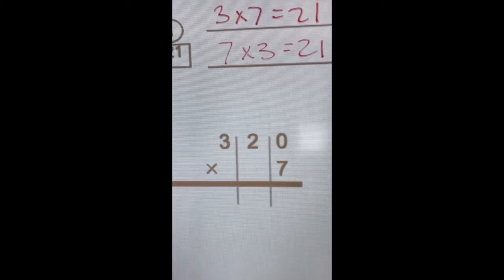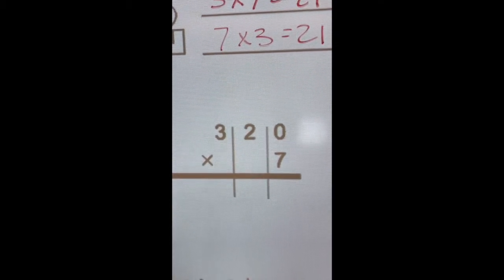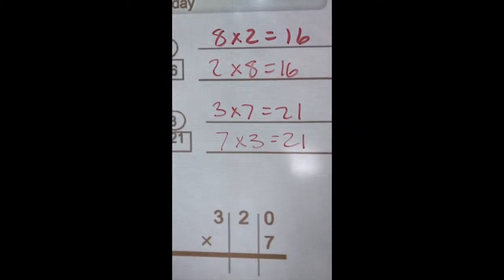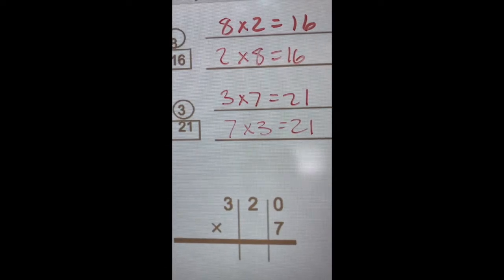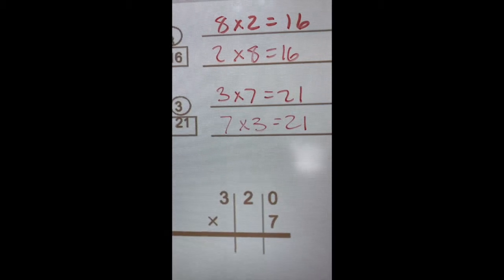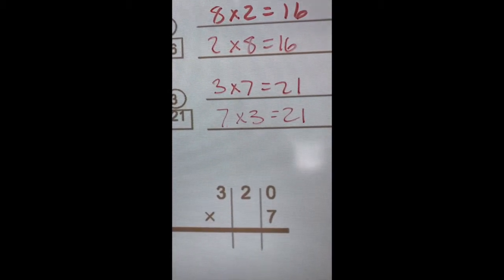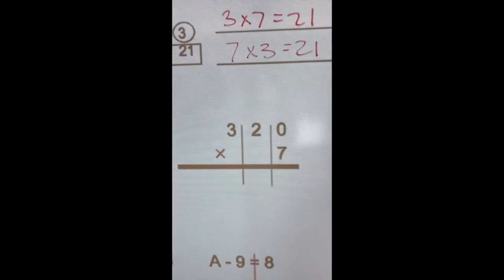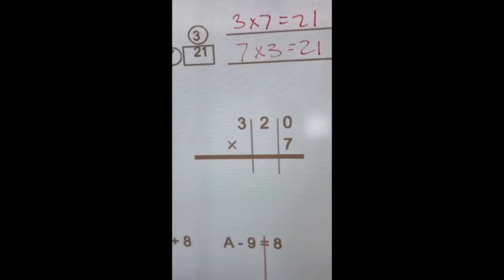Now you've got a problem coming up where you're going to multiply by 7, so you need to say some of the facts. So can you tell me those facts that you're going to need? 3 times 7 equals 21 and 7 times 3 equals 21. Okay. Do you think you can do that problem right there now? Yes. Okay. Fire it up. Go ahead.